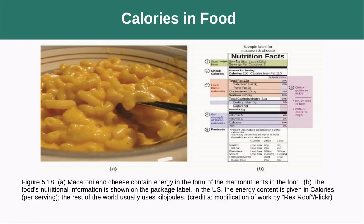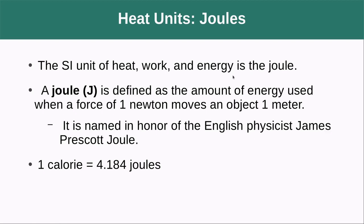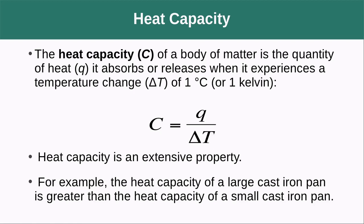The Calorie you see on nutrition facts labels is written with a big C. In most of our work, we'll use the SI unit called the Joule, defined as the amount of energy used when a force of one Newton moves an object one meter. The conversion between units is: one calorie equals 4.184 joules. You'll see that number 4.184 joules come up repeatedly whenever we're working with water.